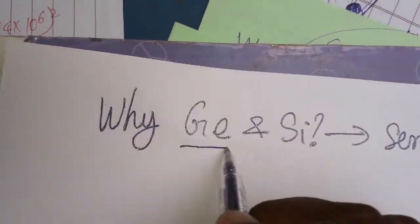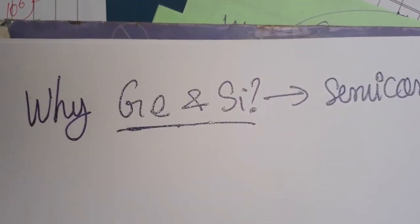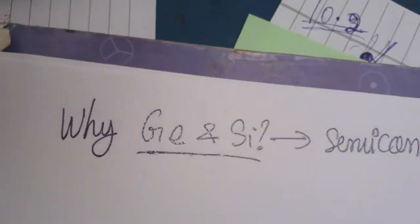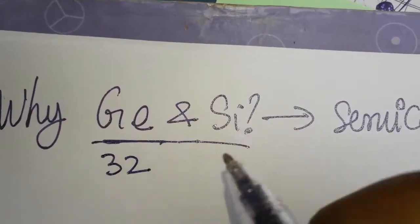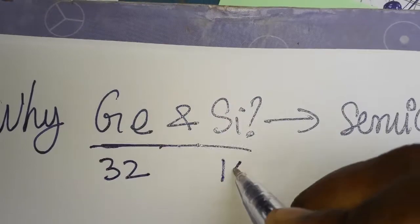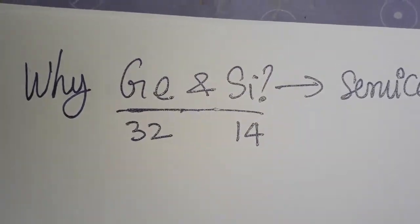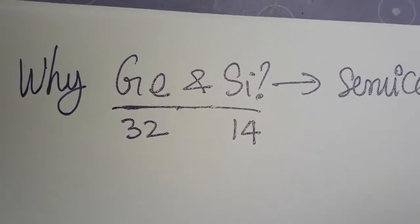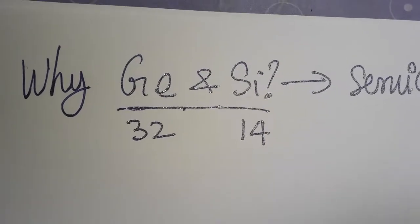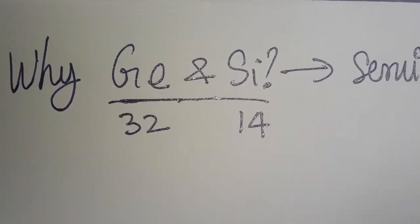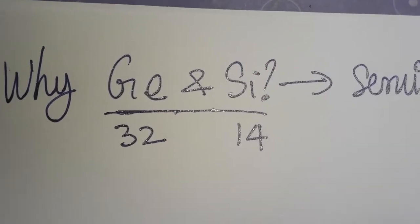Today we are going to learn why germanium and silicon are semiconductors. Germanium's atomic number is 32, silicon's atomic number is 14. What is the relation between those two elements? Before learning this, we should know what is the electronic configuration — only then we are able to learn why these two are taken as semiconductors.